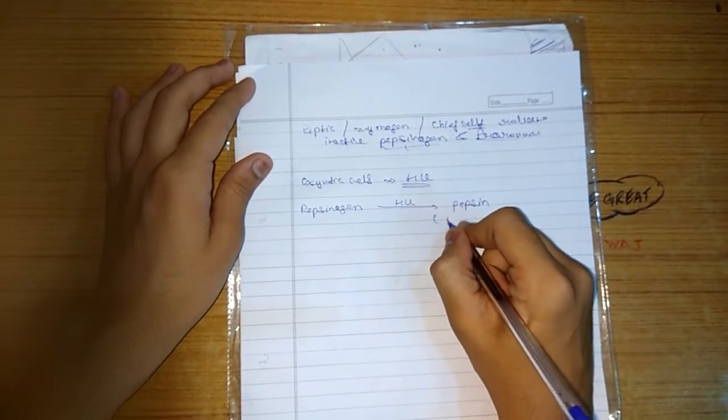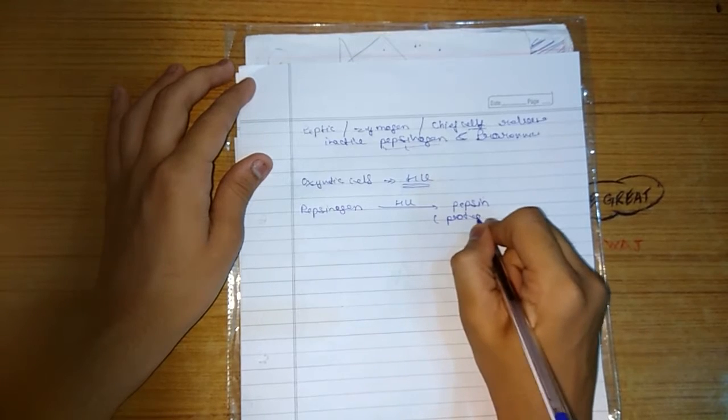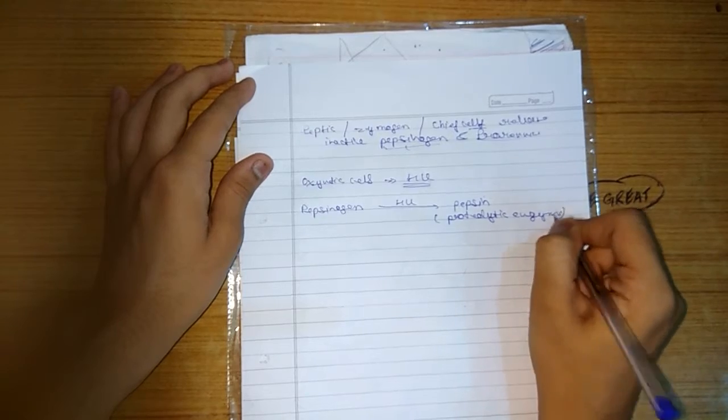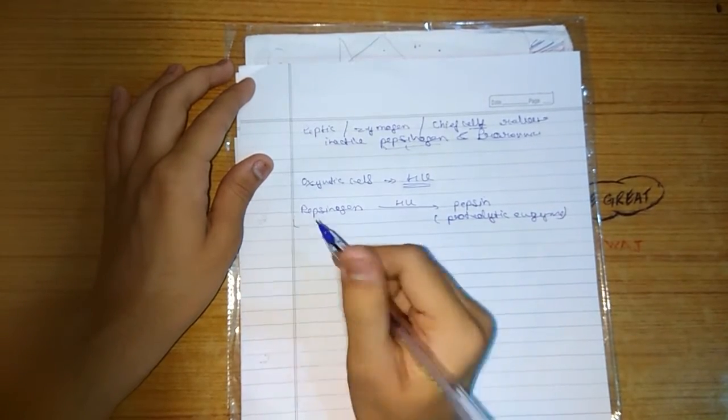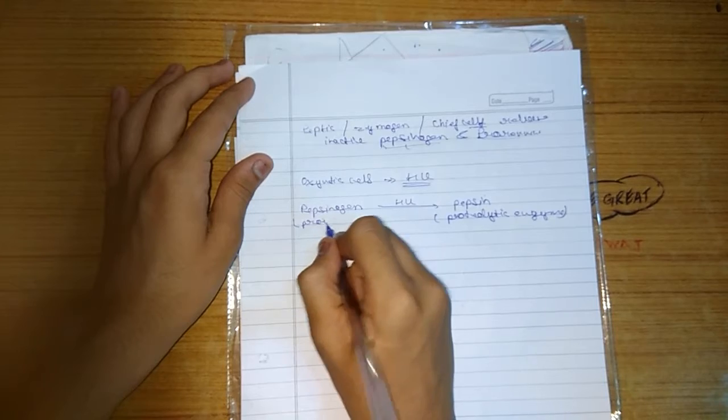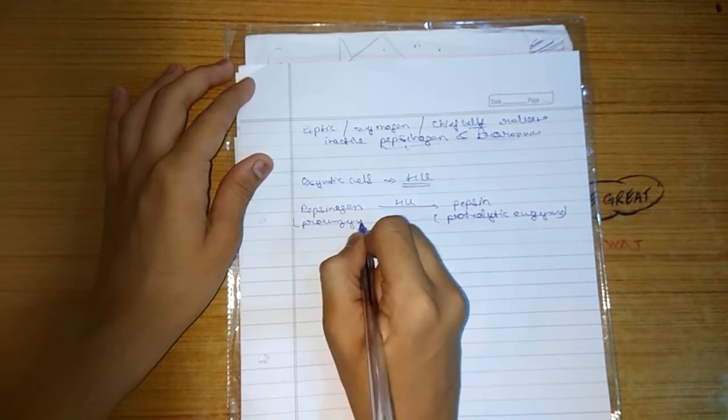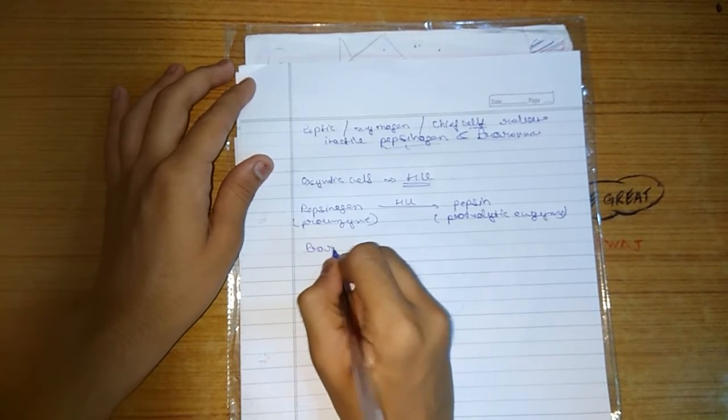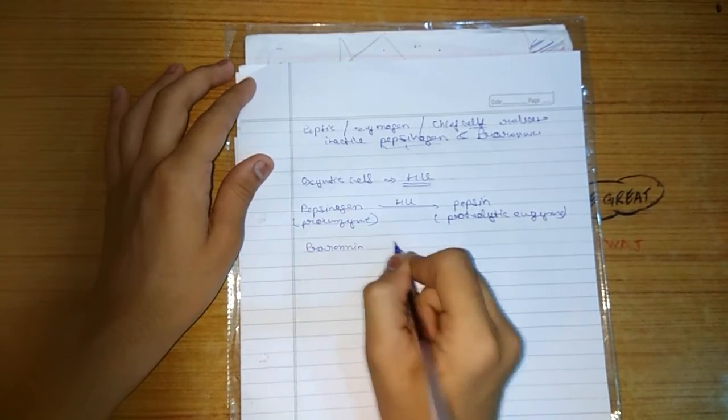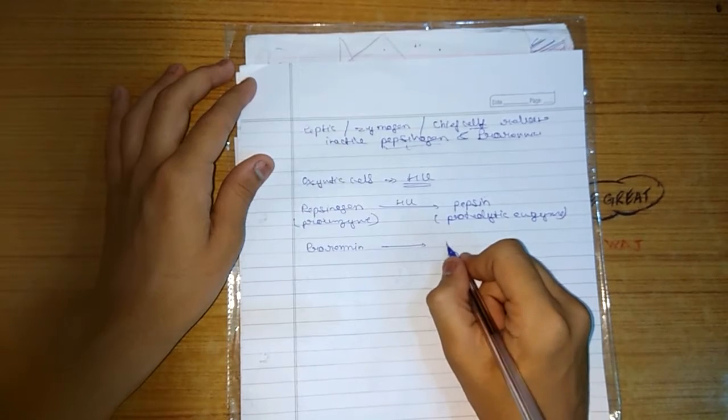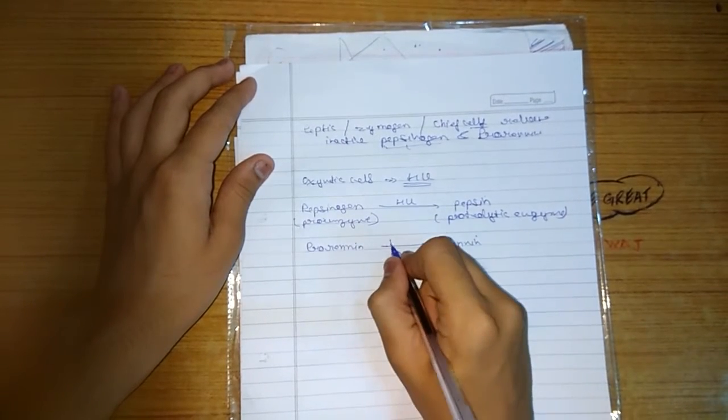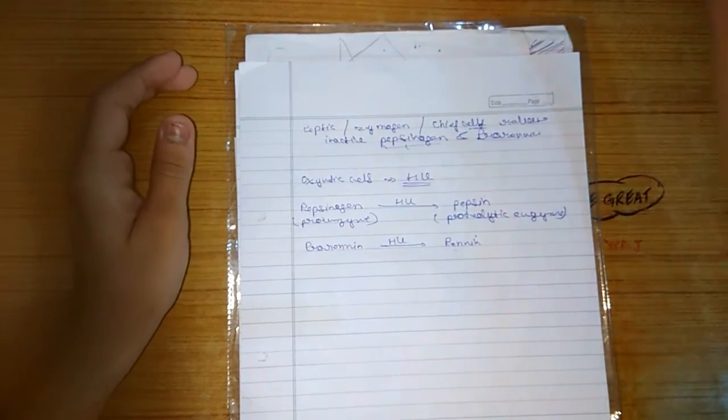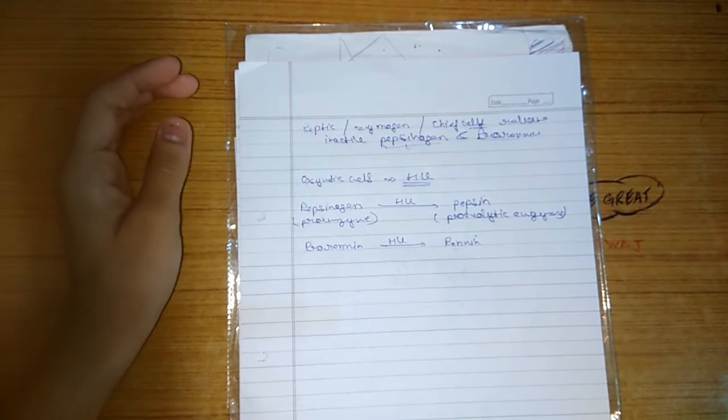These are the proteolytic enzymes, proenzymes which are also known as active enzymes. These are proenzymes. Prorenin is also converted into renin in presence of HCl. This is a proteolytic enzyme, the renin.